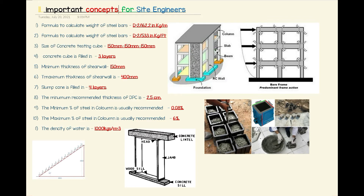At number one, it is the formula to calculate the weight of steel bars. If you are a site engineer and you have to order steel, steel is usually ordered in tons or kilograms. To find the weight of steel bars per running meter, the formula is d² divided by 162.2, which gives us the weight in kilograms per meter.